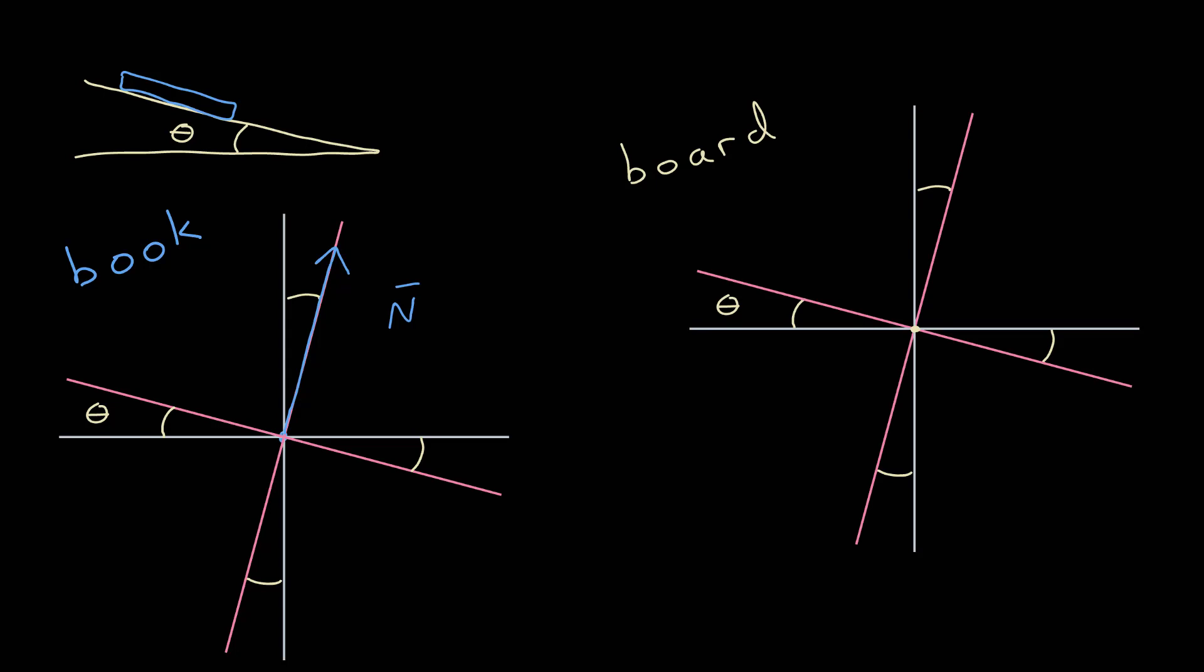If I were to do another free body diagram for the board, and I'm just identifying the normal forces in this case, now the book is the agent, the board is the object, it's still going to point along the axis perpendicular to the surface of contact,